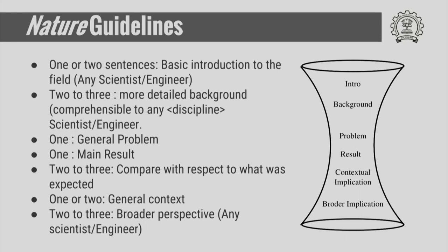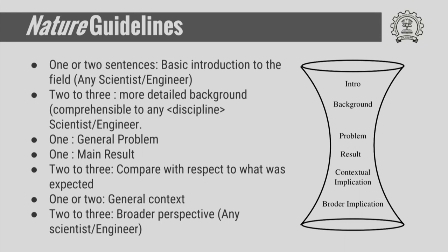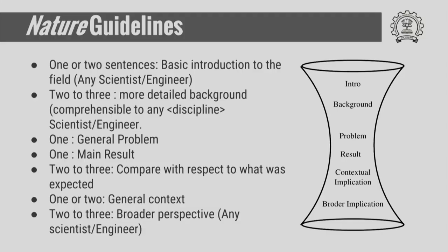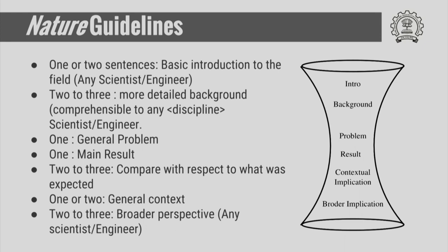The structure of an abstract is as follows. You have a very broad introduction that narrows down, and then again goes to broad implications — think of it as an hourglass shape. We start with an introduction that is very wide, and every scientist or engineer must be able to understand at least a little bit of it. One or two sentences of very broad introduction, followed by a little more detail understood by people in your department. The first line must be understood by the university, and the next couple of lines by people in your department.